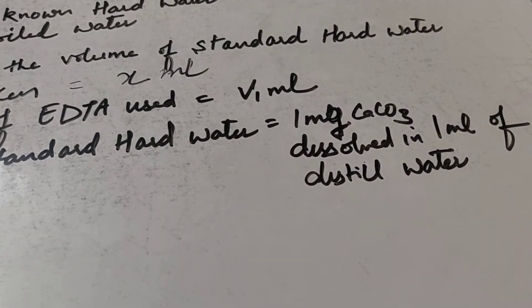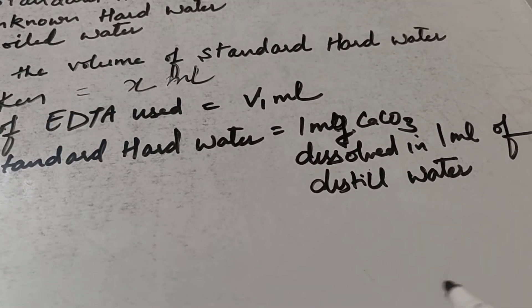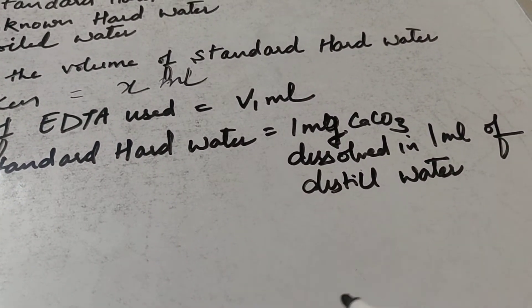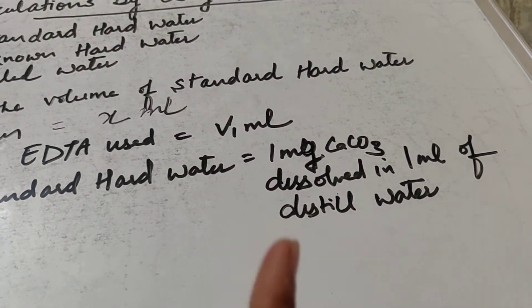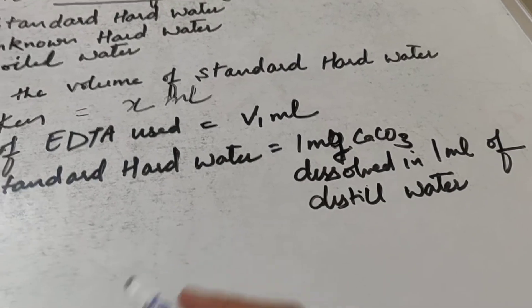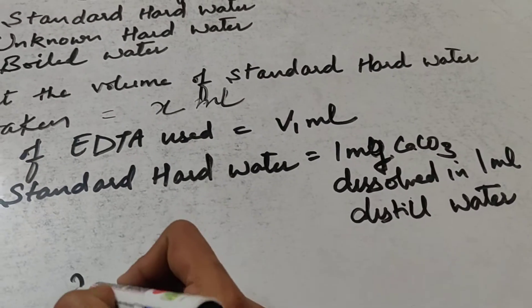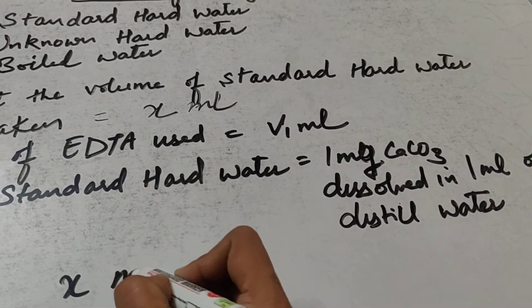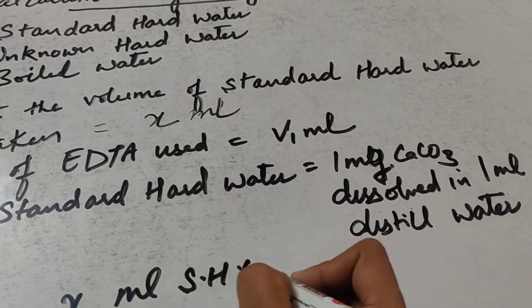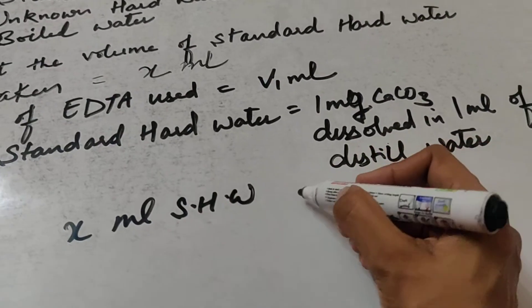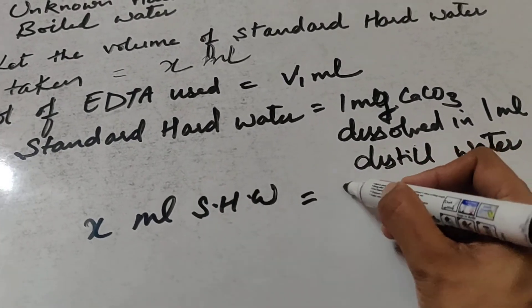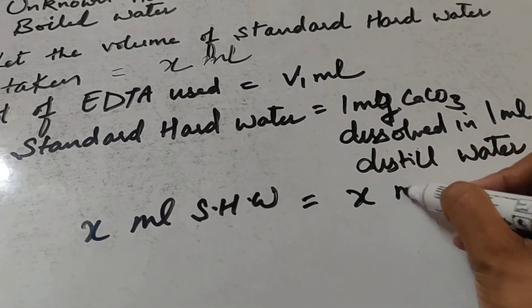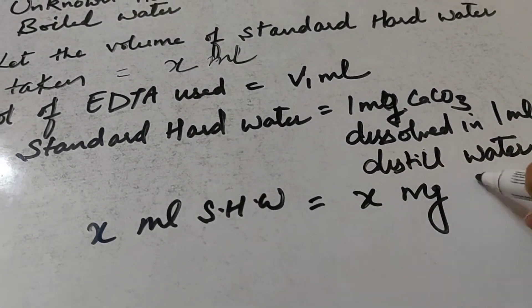So in 1 ml of distilled water, when we are making standard hard water, we dissolve 1 mg CaCO₃. Therefore, in X ml of standard hard water, how much CaCO₃ will be present? X mg.